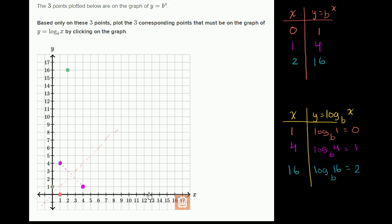So when x equals 16, y equals 2. Notice we've essentially just swapped the x and y values for each of these points. This is why this is a reflection over the line y equals x.